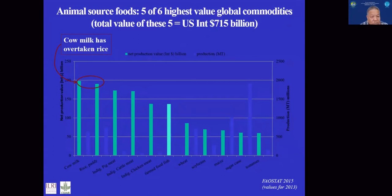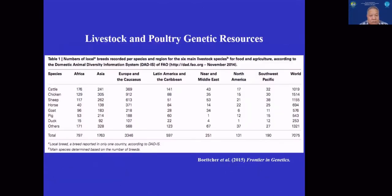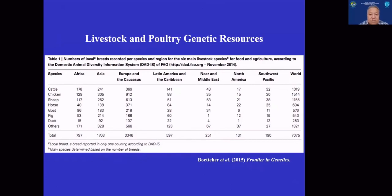Livestock production is very important, and to deal with this sort of emergency issue today, the United Nations FAO has come up with a summary of all the number of livestock breeds or genetic resources we have today. When we work on animals, we use the term breed or genetic resource, similar to the accessions of crop genetic resources.